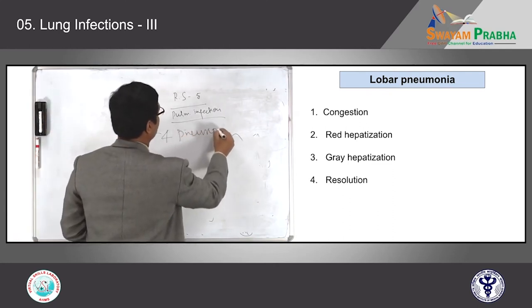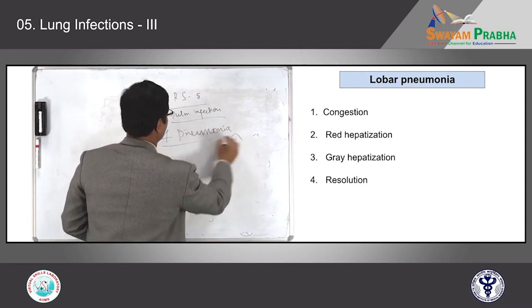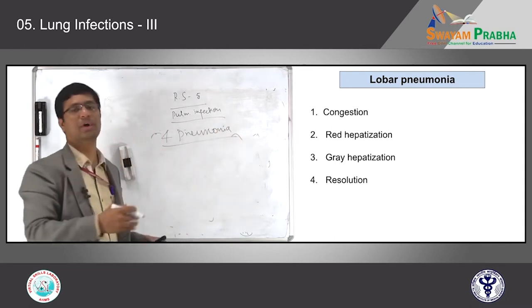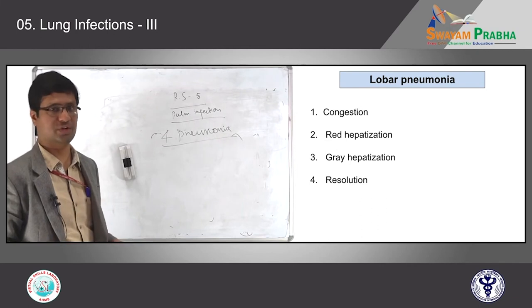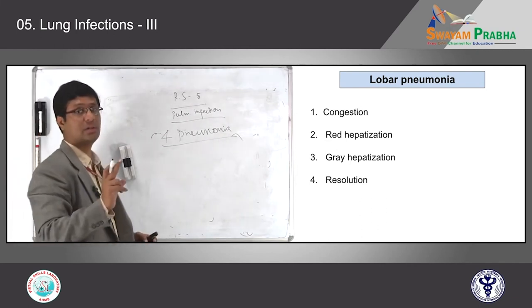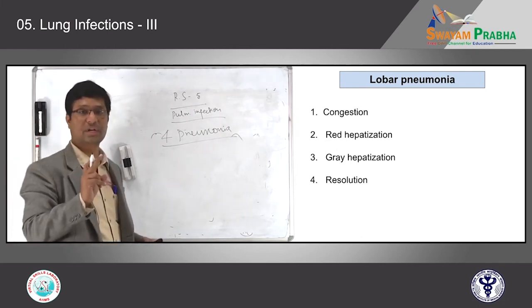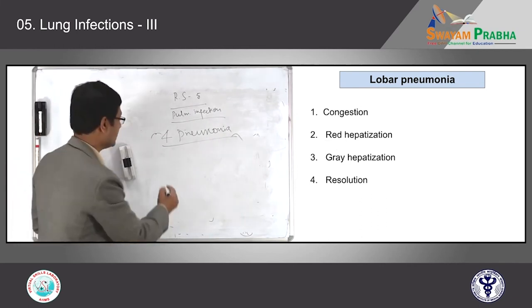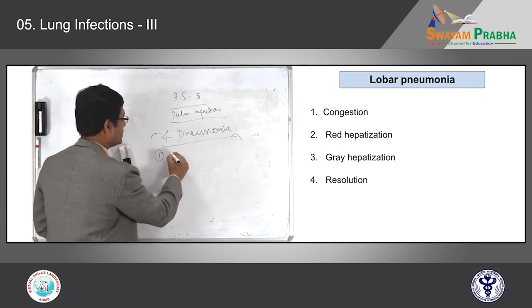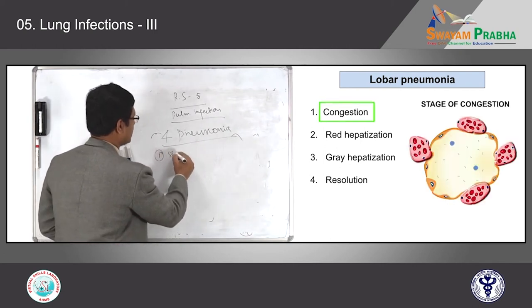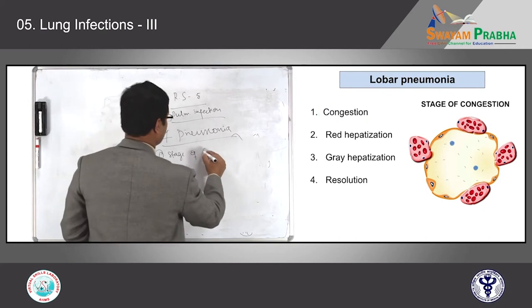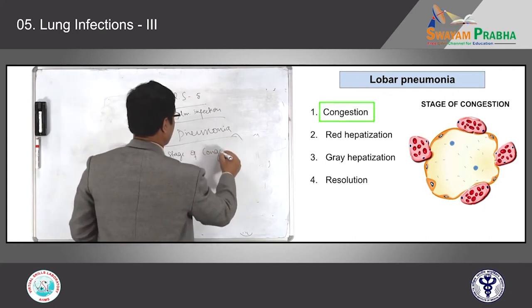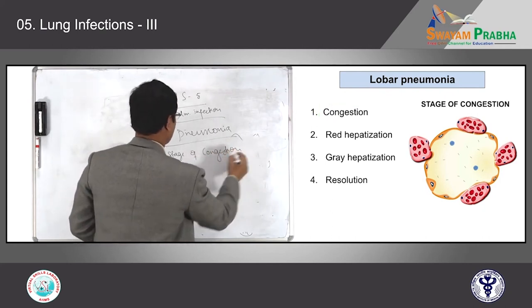Let's see each stage under microscopic examination. In the stage of congestion, you have alveolar parenchyma with septal capillaries present in the inter-alveolar septa. When there is inflammation, these septal capillaries will engorge and enlarge.